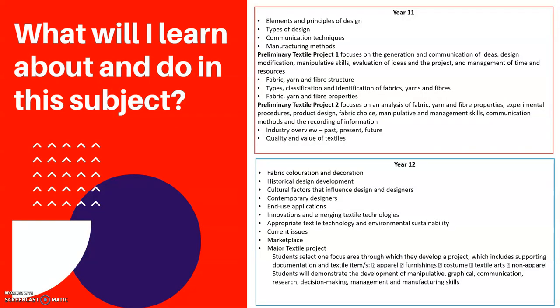This breaks the course down in more depth with exactly what we are going to study: the elements and principles of design, types of design, fabric construction, and fibre. In Year 11, there are two projects to complete — textile project one and textile project two. These are essentially the big Year 12 portfolio split into two, so you learn the expectations for Year 12 across two projects. In Year 12, we do more fabric coloration and surface decoration, look at historical clothes and clothing from different countries, and explore new technology and new applications for textiles.